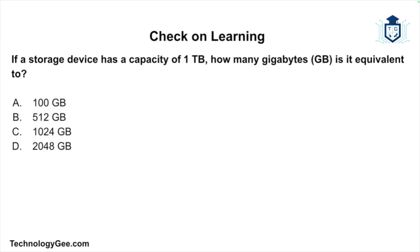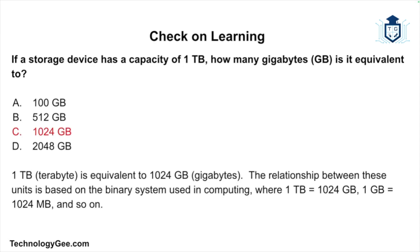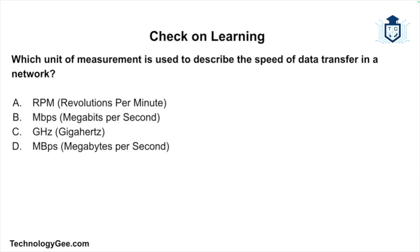Question two: if a storage device has a capacity of one terabyte, how many gigabytes is it equivalent to — 100 gigabytes, 512 gigabytes, 1024 gigabytes, or 2048 gigabytes? The correct answer is 1024 gigabytes. One terabyte is equivalent to 1024 gigabytes. The relationship between these units is based on the binary system used in computing, where one terabyte equals 1024 gigabytes, one gigabyte equals 1024 megabytes, and so on.